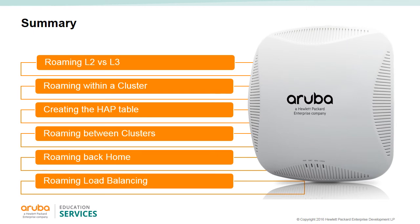In this module we looked at the differences between L2 roaming and L3 roaming, and how roaming within a cluster takes place. We saw the two ways a HAP table can be created - manually or dynamically using DNS. We also saw roaming between clusters, roaming back home, and roaming load balancing - for example in the case of an office meeting with everybody going to different locations afterwards.